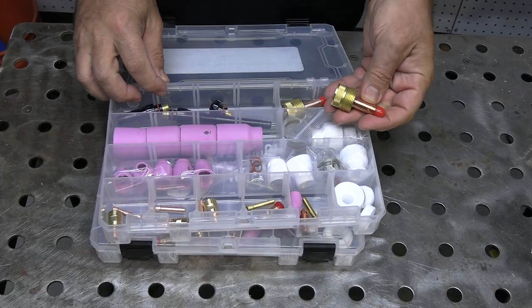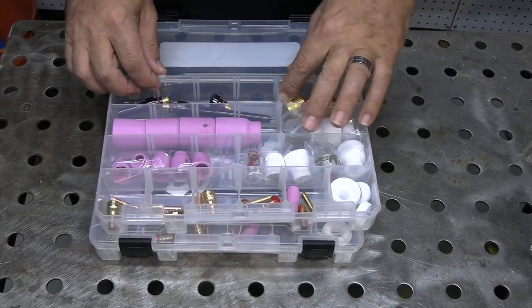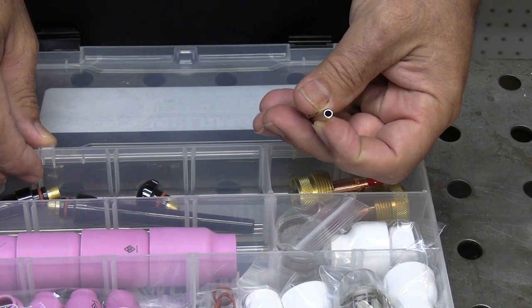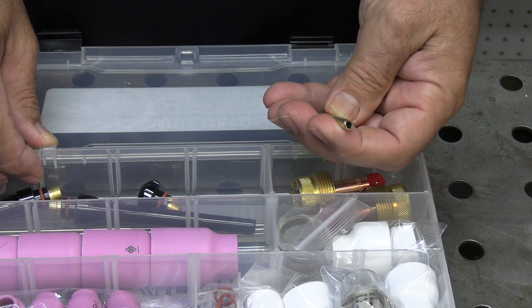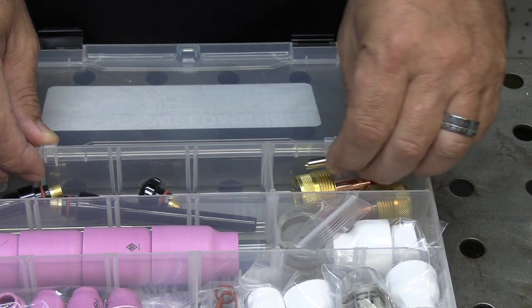This kit also comes with large diameter gas lens collet bodies and wedge collets. Wedge collets don't have a split in them. They just have a wedge. They work great and they last a lot longer than the split version.